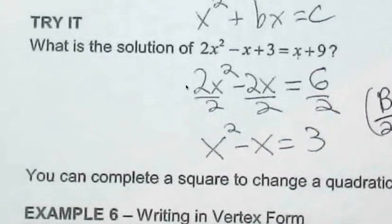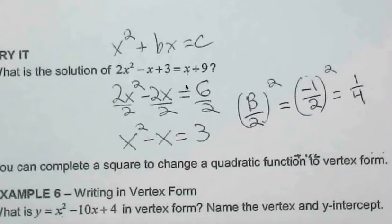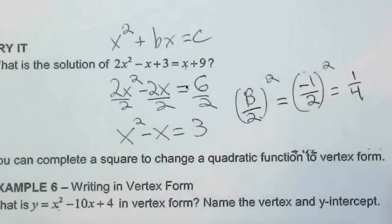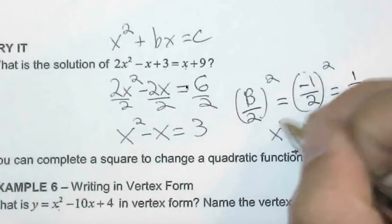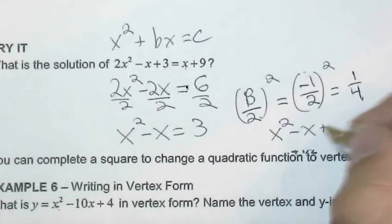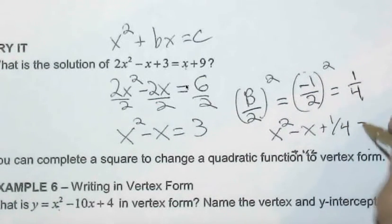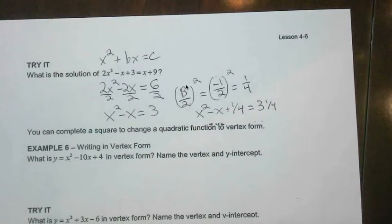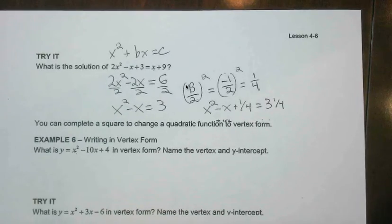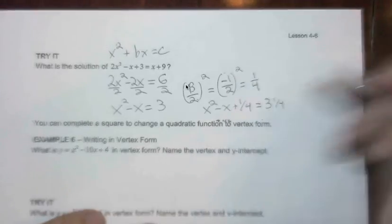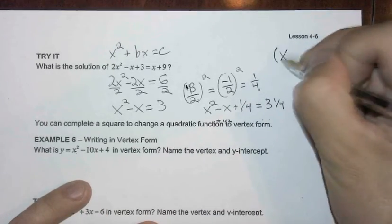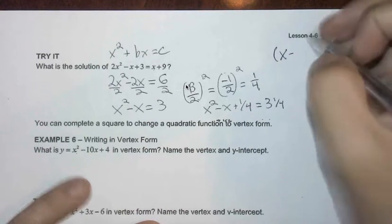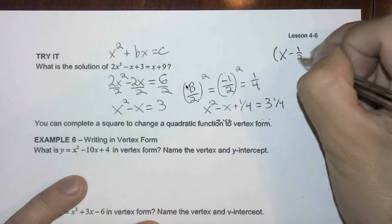So if we add 1 fourth to both sides, we have x squared minus x plus 1 fourth equals 3 and 1 fourth. The left side, we can actually factor this to x minus 1 half being squared.